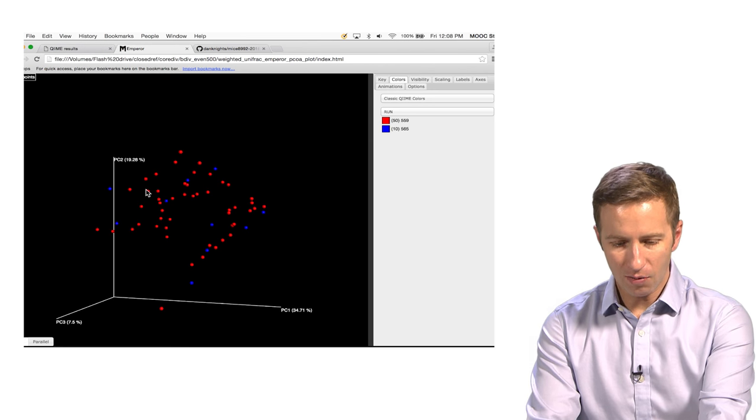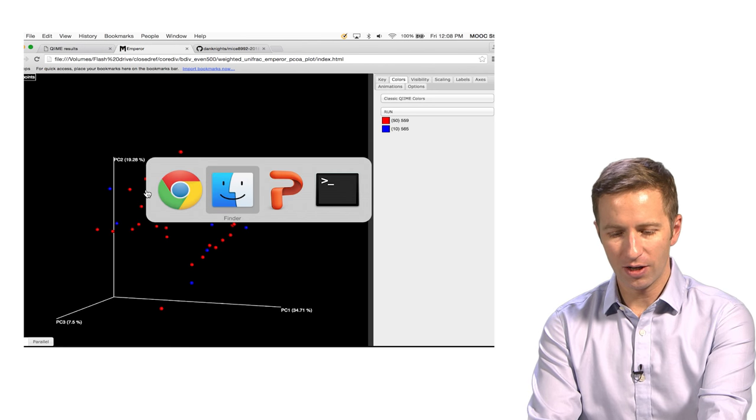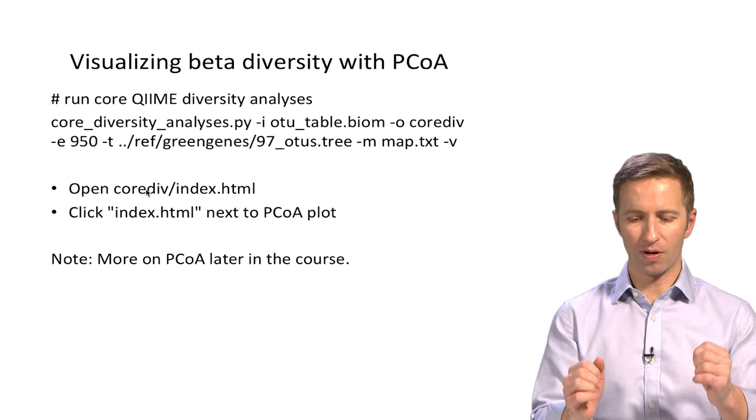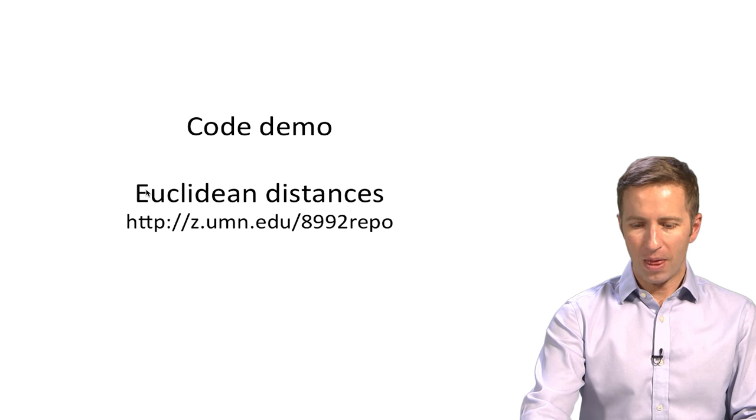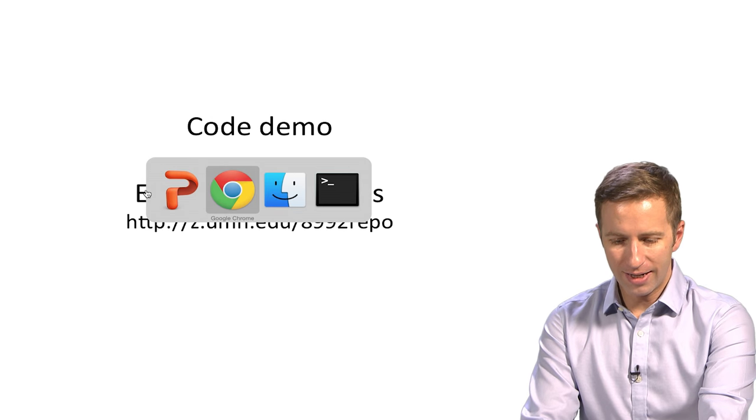it looks like sequencing run didn't really matter that much. So that's good news. So anyway, that's how we're looking at this. For the rest of this video, we'll be sticking with just a 2D representation of the first two axes of variation.